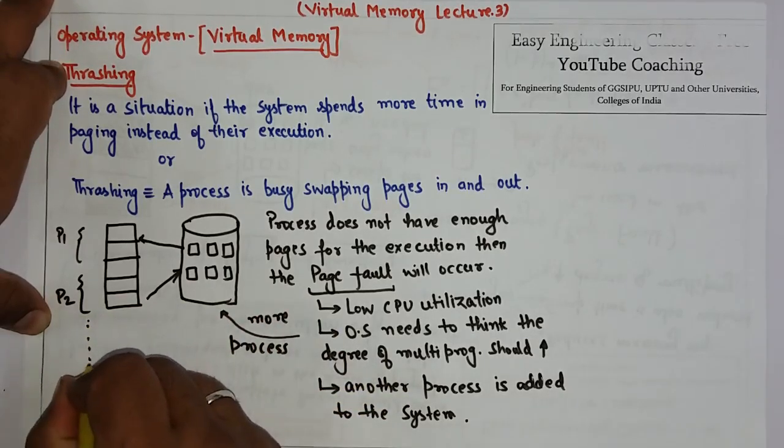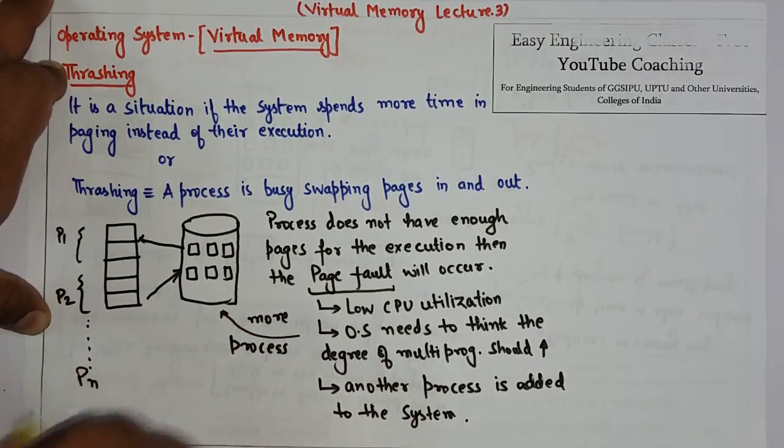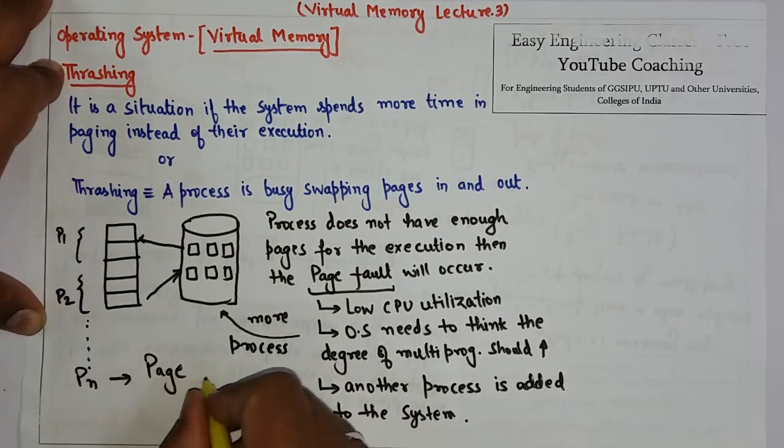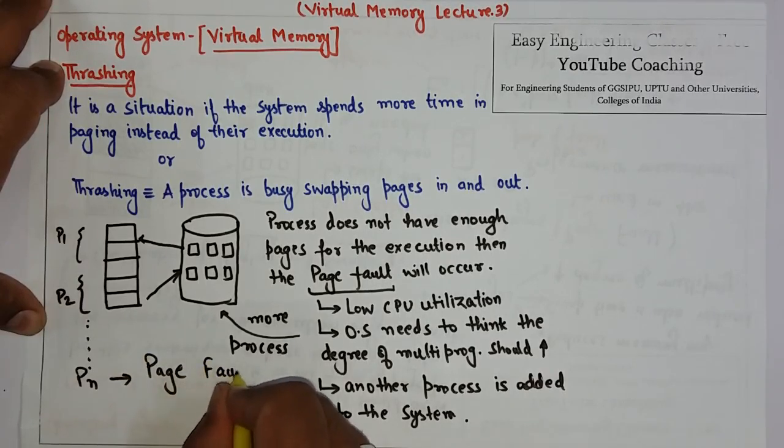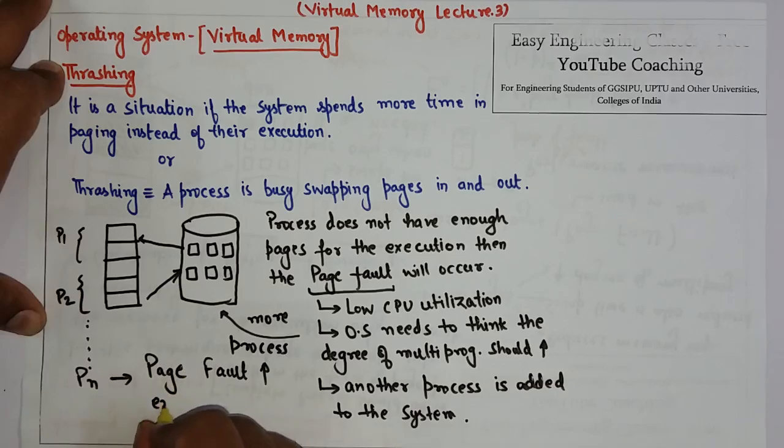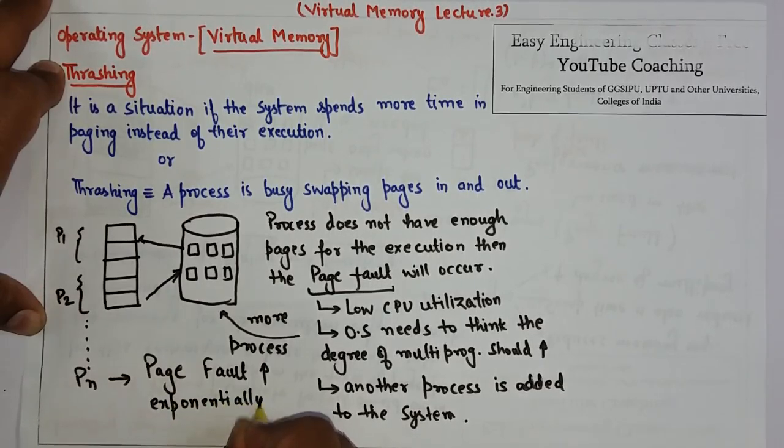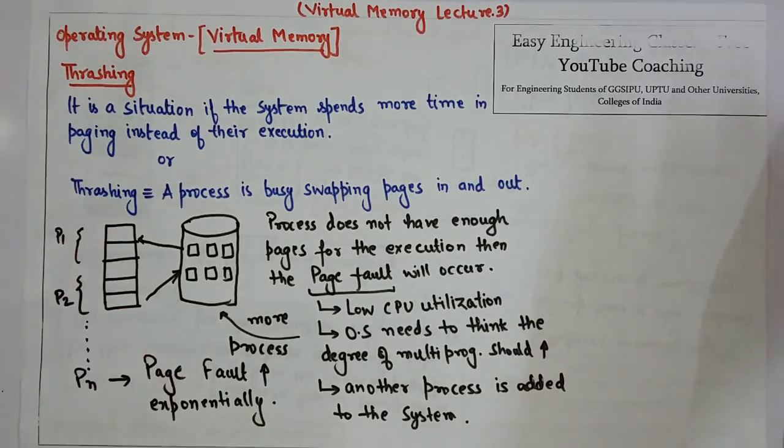So the system will increase the degree of multiprogramming exponentially and there will be a time when the degree of multiprogramming will increase but CPU utilization will decrease to almost zero when the page fault increases.